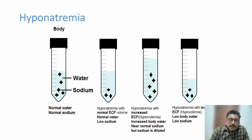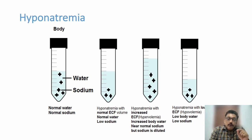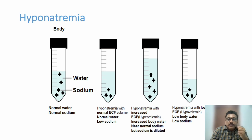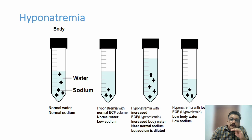Hyponatremia means sodium levels less than the normal value of 135 milliequivalents per liter. There are three important types of hyponatremia: in the first type body water is normal, in the second type body water is high, and in the third type body water is low.